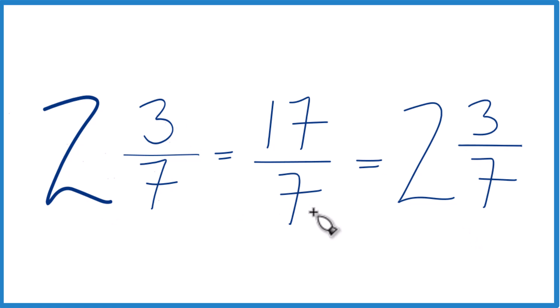And that's what we started with, so we know we did this correctly. And these numbers here, 2 and 3 sevenths, that's equivalent to 17 sevenths. They have the same value, it's just that we're representing this here now as an improper fraction. This is Dr. B. Thanks for watching.